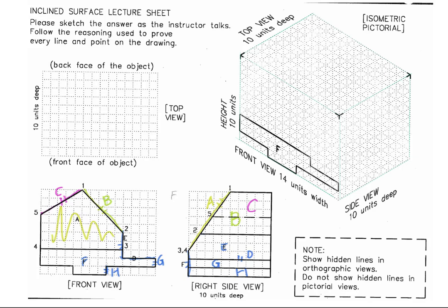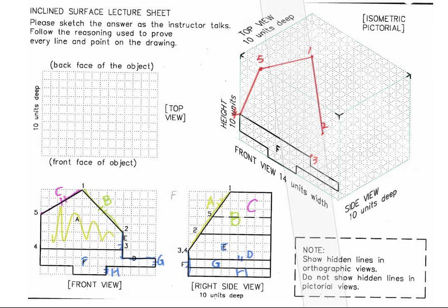Make sure you have all of the letters marked in the front and the right side. Since surface F is already completed in the isometric, we can easily mark number 4 and number 3 on top of surface F. Starting from number 4, we can locate number 5 by checking the height, the width, and the depth — the three dimensions. Similarly, we can continue to locate number 1 and number 2 in the isometric view. Always keep in mind you have to check the three dimensions: the height, the width, and the depth.